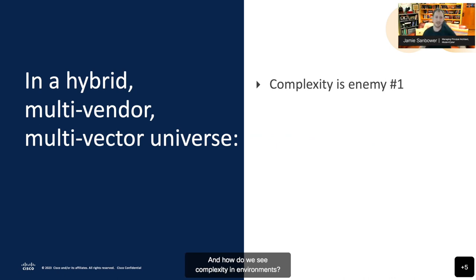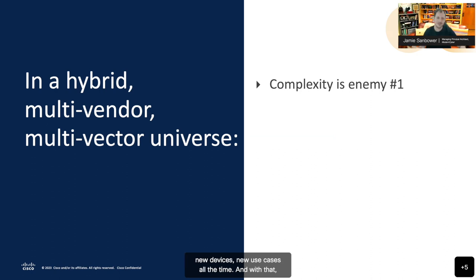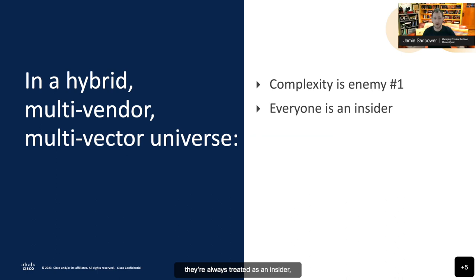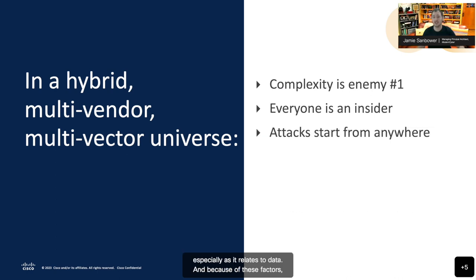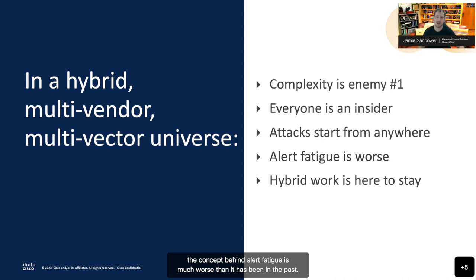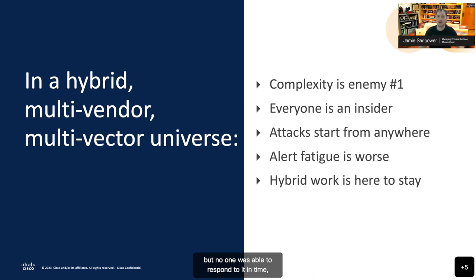How do we see complexity in environments? It comes down to technical debt, the data incorporated within the IT and security infrastructure, and how much change is naturally occurring — new applications, new devices, new use cases all the time. Everyone within the organization is an insider, so you have to protect whether they're at home, at a local cafe, or at an organization's location — they're always treated as an insider, especially as it relates to data. Because of these factors, attacks can start from anywhere. The concept of alert fatigue is much worse than it has been in the past. It hurts when you see news articles about big breaches where the alert was there, but no one was able to respond in time or prioritize that alert to actually take action.